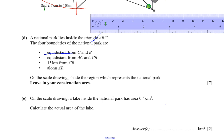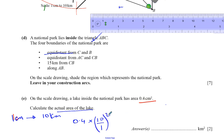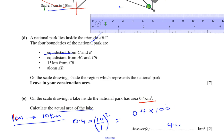Part E says: on the scale drawing, a lake inside the national park has an area of 0.4 centimeters squared. Calculate the actual area. We know 1 centimeter represents 10 kilometers. So the actual area is 0.4 times (10/1) squared — we square the linear scale ratio to convert areas. That gives 0.4 times 100, which equals 40 square kilometers. This is much simpler than converting to a ratio of 1 to 1,000,000 and working in those units.